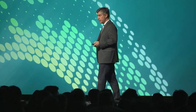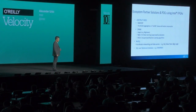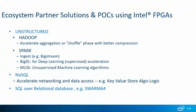Let's take a look at a few examples from our partner ecosystem, as well as some of the examples that Intel has built. For the unstructured approach with Hadoop, we've been able to accelerate the aggregation or shuffle phase, primarily through implementing a high-performance compression algorithm in the FPGA. We can do this for Spark as well. A partner of ours called Bitstream has been able to accelerate the ingress, the in-data processing to Spark, by about 3x by taking advantage of the FPGA.